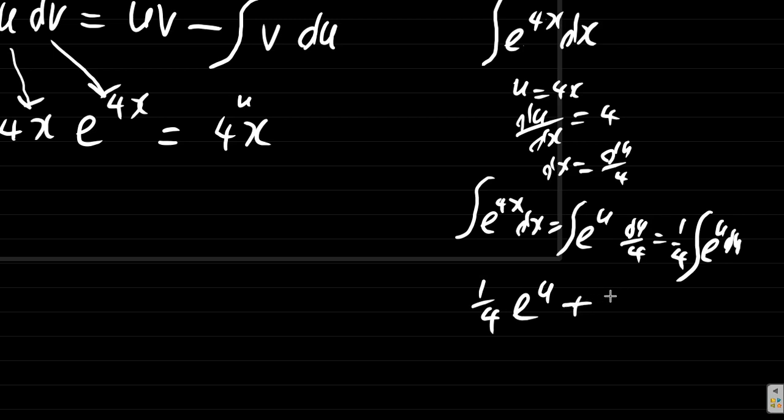plus a constant, plus c. Now here, what is u again? u is 4x, so it's a quarter e to the 4x plus c.